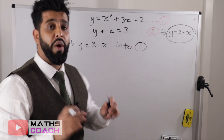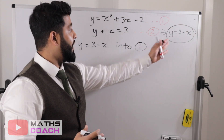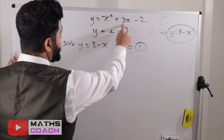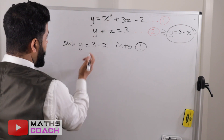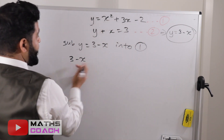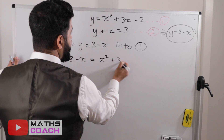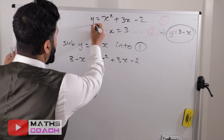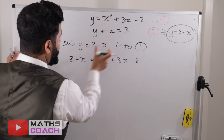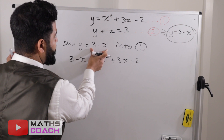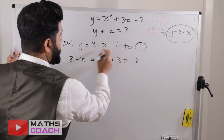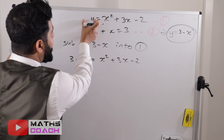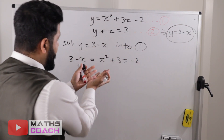Wherever we see a y in equation one, we substitute 3 minus x. The y is on the left-hand side, so instead of writing y we write 3 minus x, giving us: 3 minus x equals x squared plus 3x minus 2. Just to recap — we rearranged the second equation to make y the subject, giving y equals 3 minus x, and that's what we substituted in.